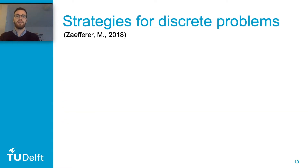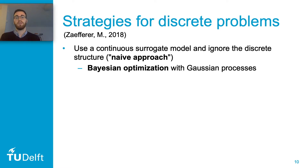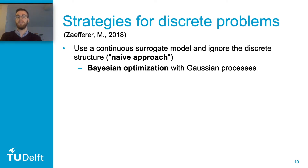Now I'll talk about the strategies we can use to apply a surrogate-based algorithm to discrete problems. The first strategy is to simply use a continuous surrogate model and ignore the discrete structure — this is also known as the naive approach. One way of doing this is to simply round off any real-valued inputs to the Bayesian optimization into discrete values. One algorithm that can do this is Bayesian optimization with Gaussian processes as the surrogate.